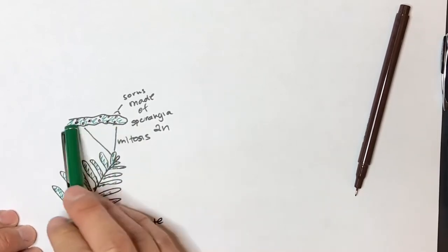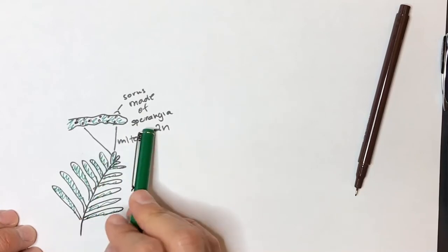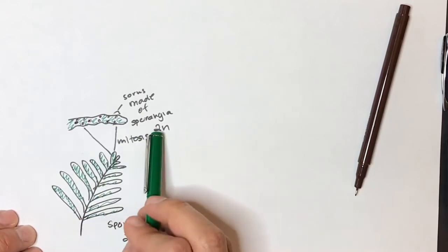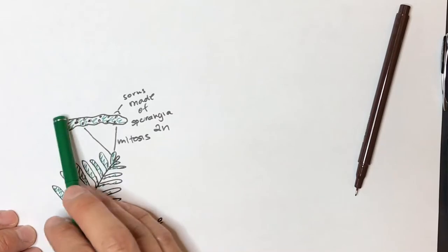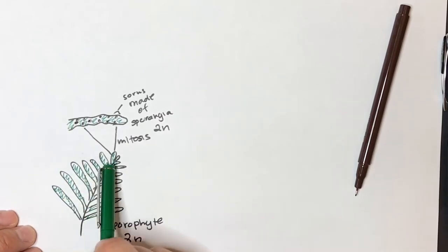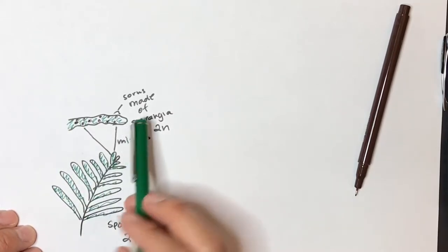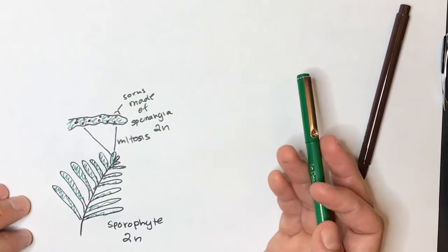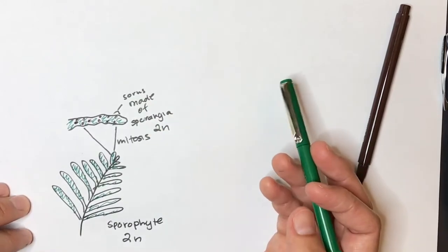On the underside of the sporophyte, we have the sporangia. So these sporangia are clustered together in these little brown dots along the underside of each of these little leaves on the fern, and these cluster together to make a sorus. So these little brown dots are sorae.